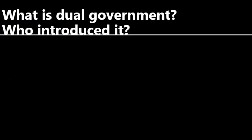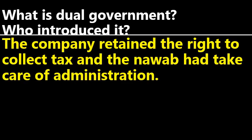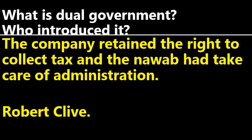What is dual government? Who introduced it? Dual government means the company retained the right to collect tax in Bengal and the Nawab had to take care of administration. Robert Clive introduced it.